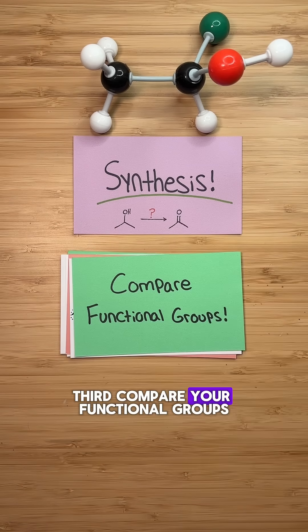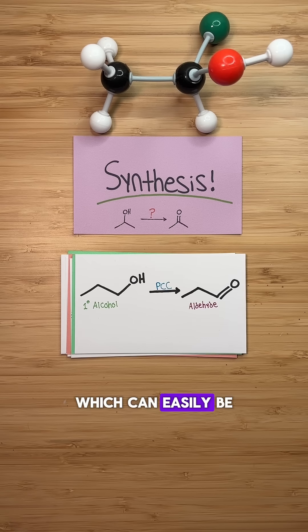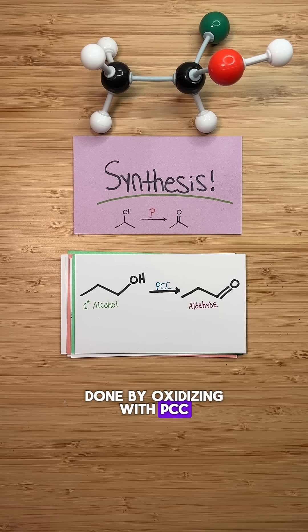Third, compare your functional groups. Here we start with a primary alcohol and end with an aldehyde, which can easily be done by oxidizing with PCC.